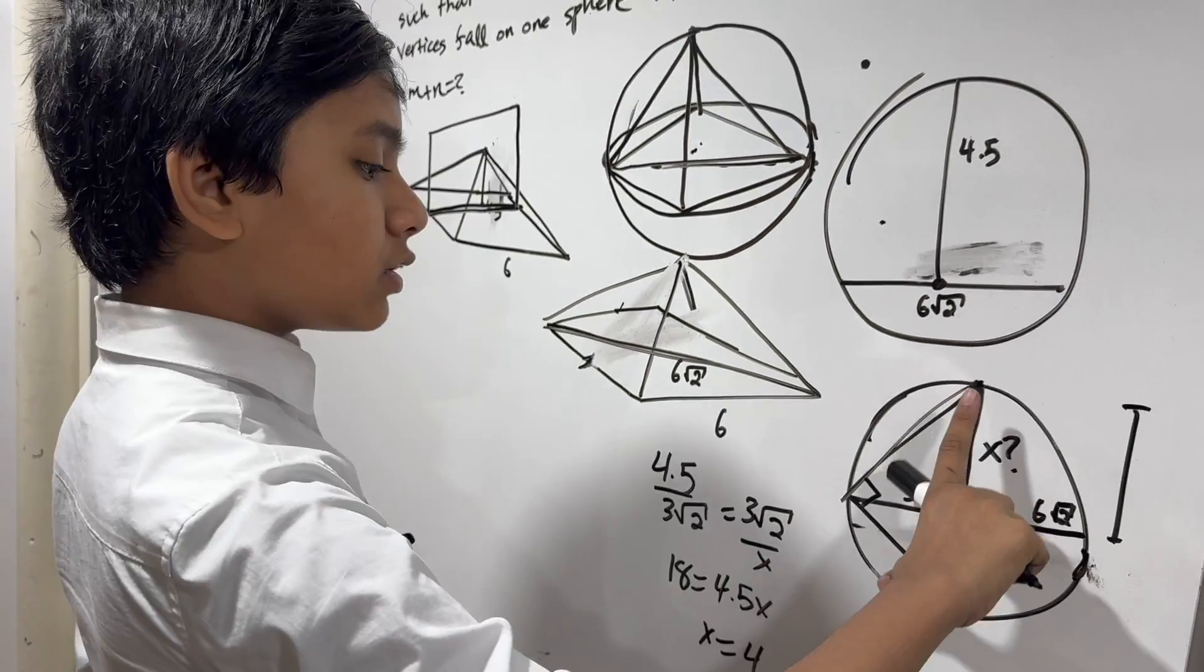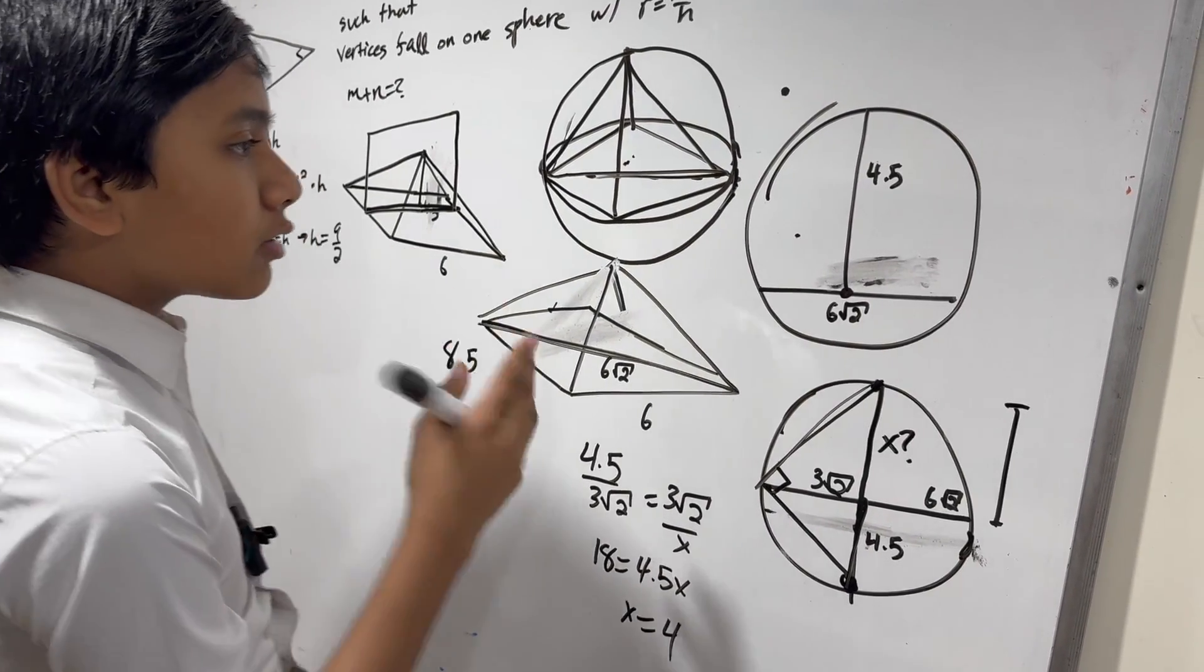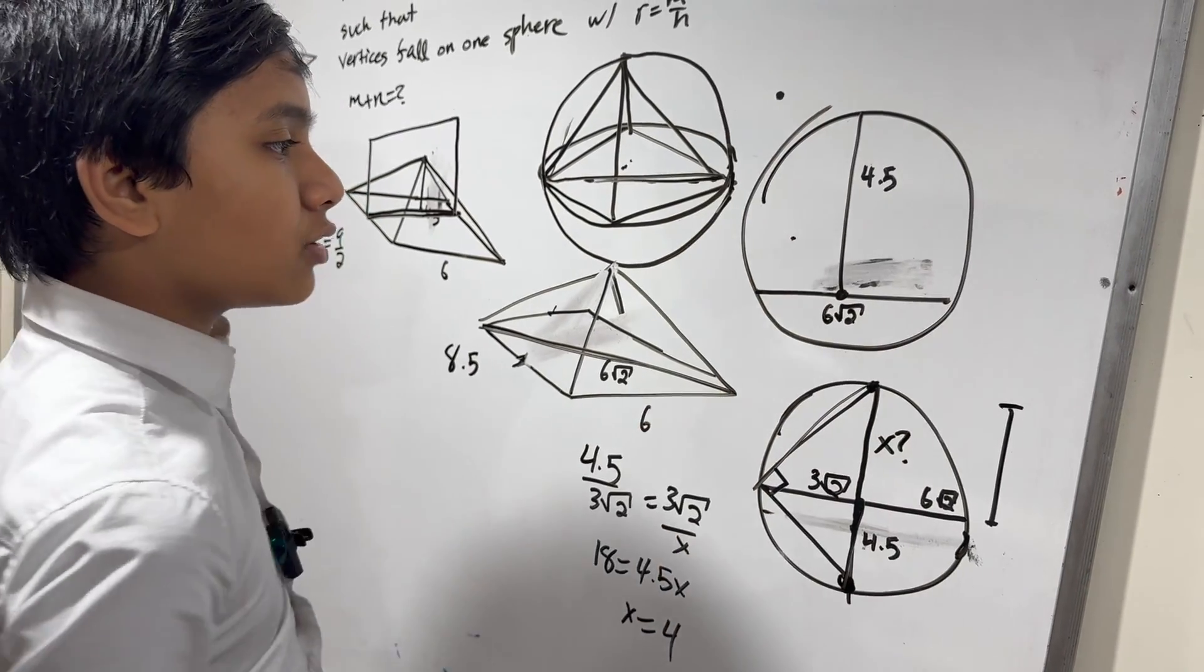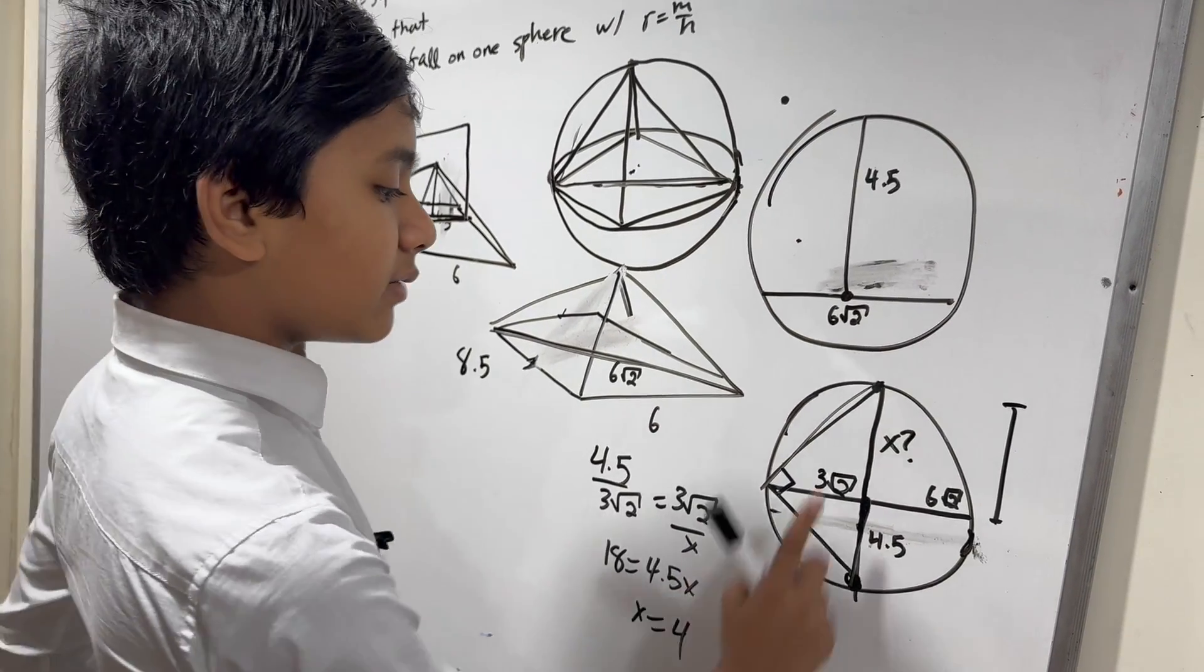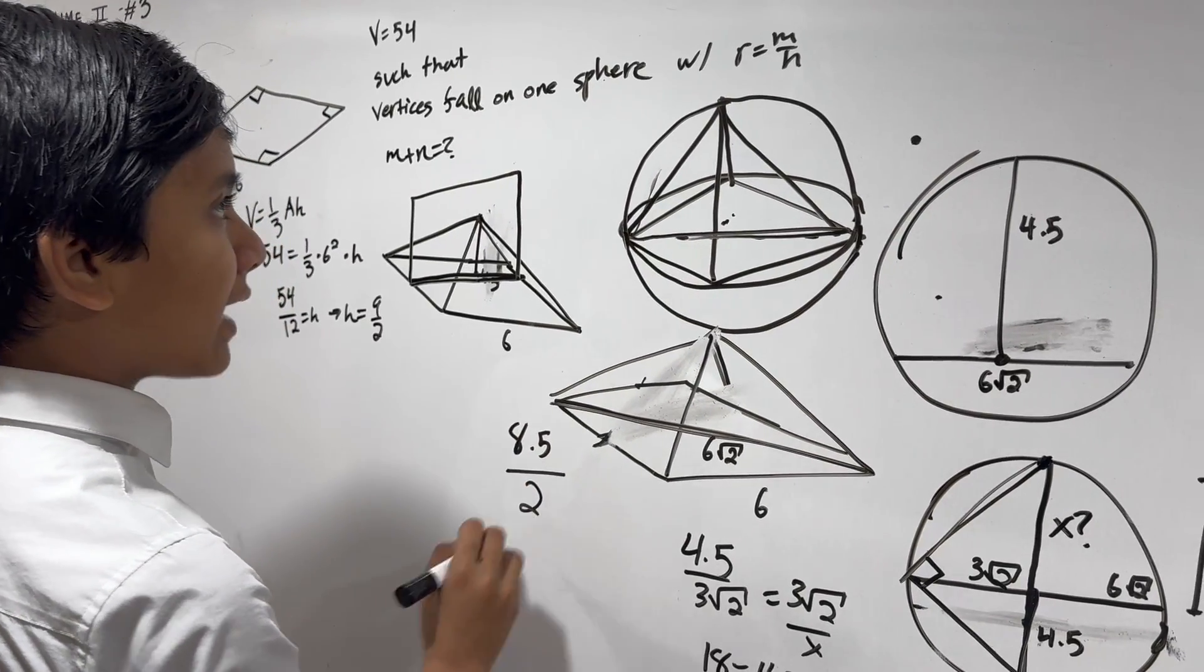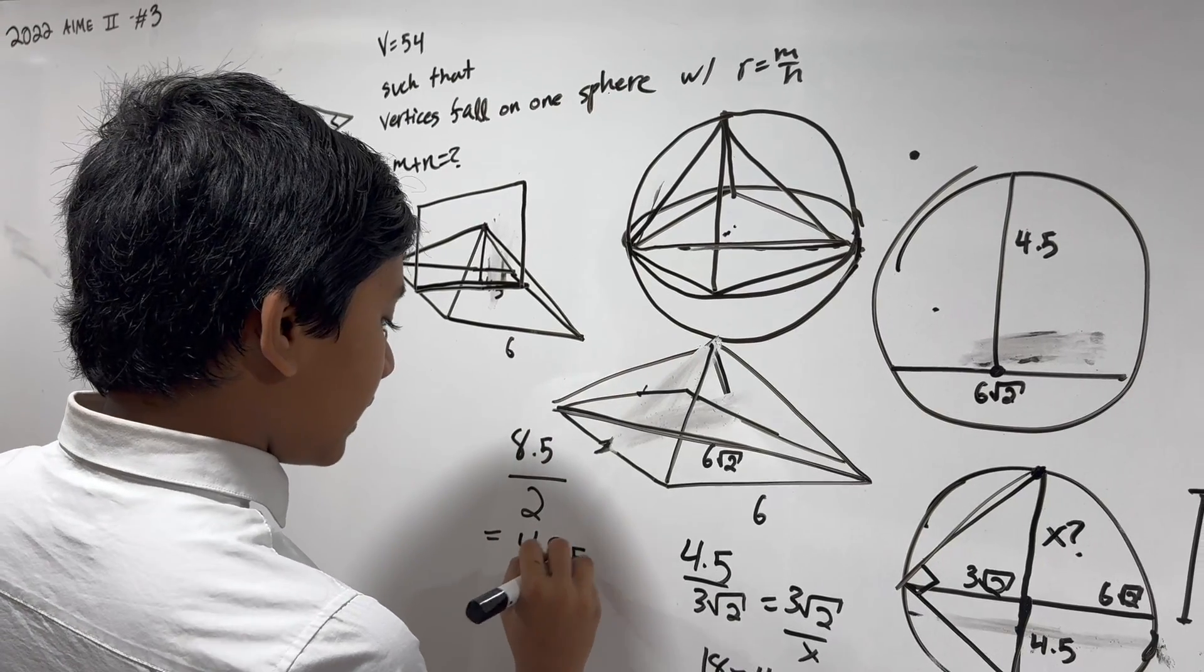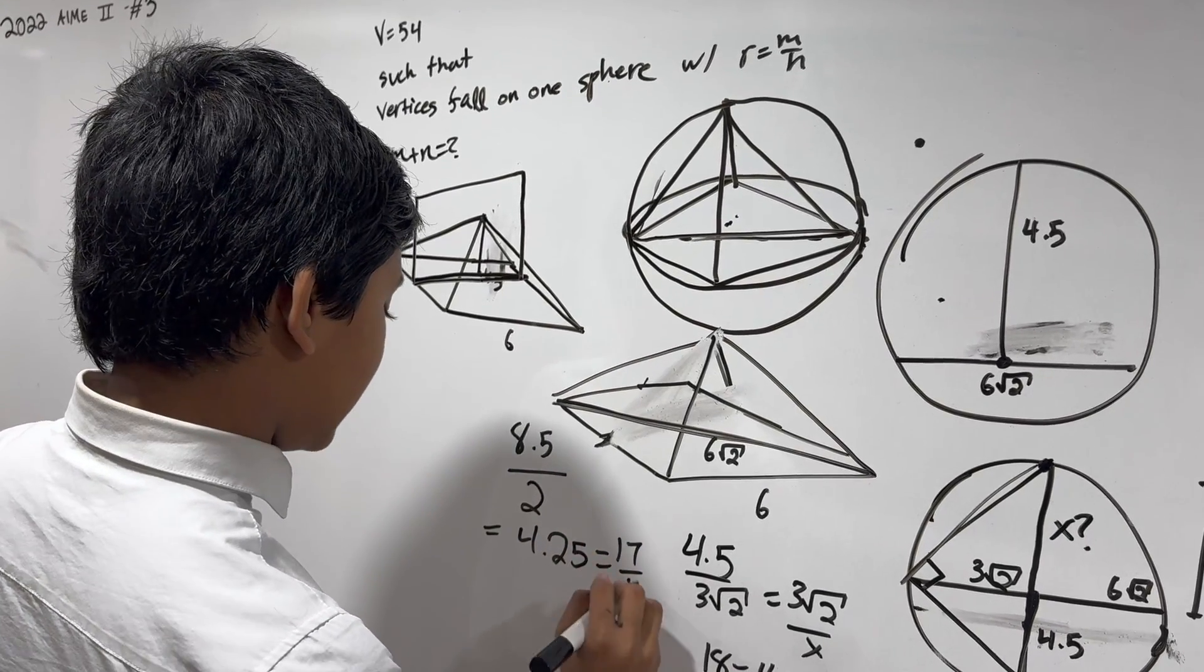So that means we have 18 equals 4.5x, or x equals 4. The diameter of this cross section is 8.5, and remember the cross section goes right through the center, which means that the diameter of this must reflect the diameter of the sphere. And we were asked to find the radius, which is 4.25.